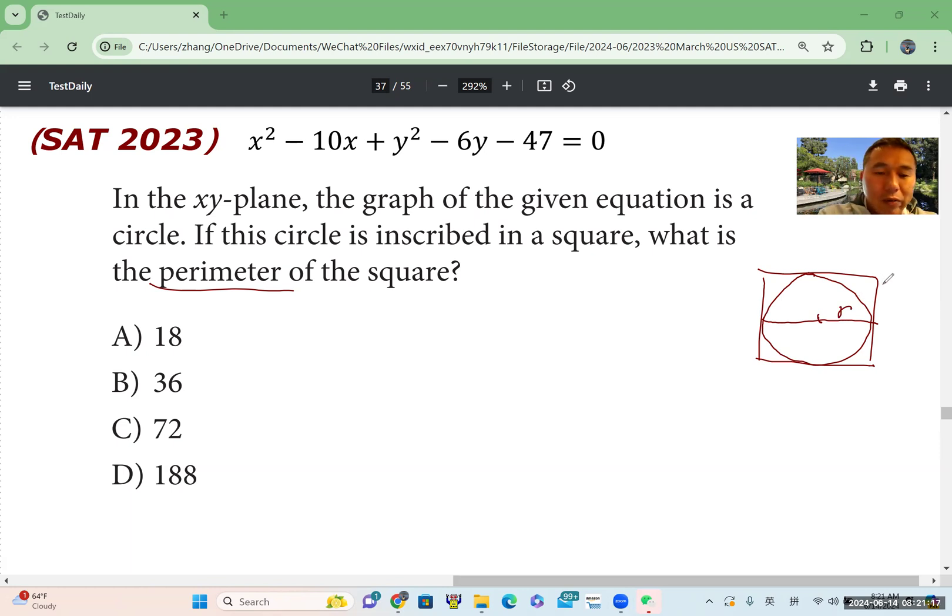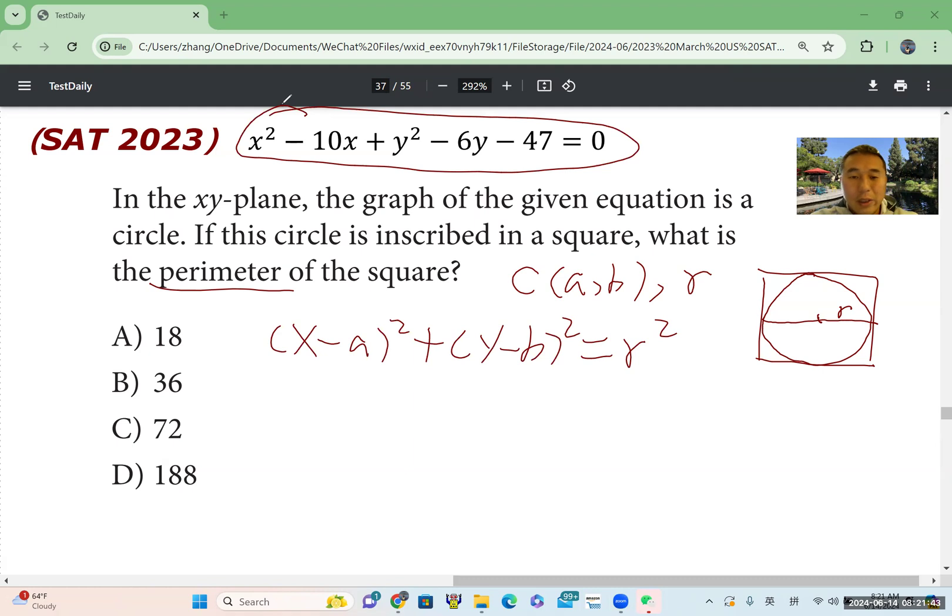We know the standard equation for a circle is, if the center is (a, b), radius, we use letter r. Then the standard is (x - a)² + (y - b)² = r². Now we want to write this into the standard equation for the circle.